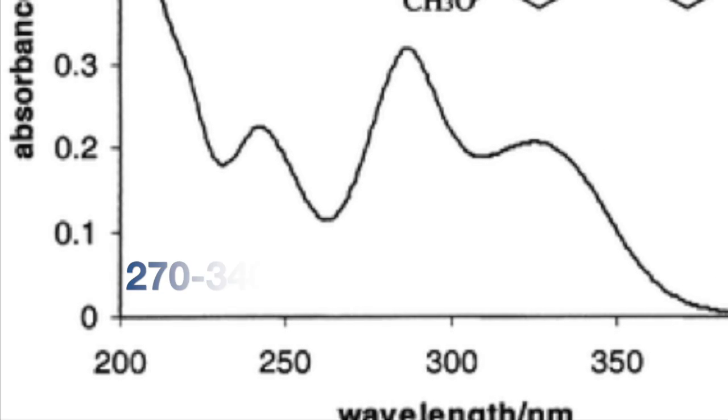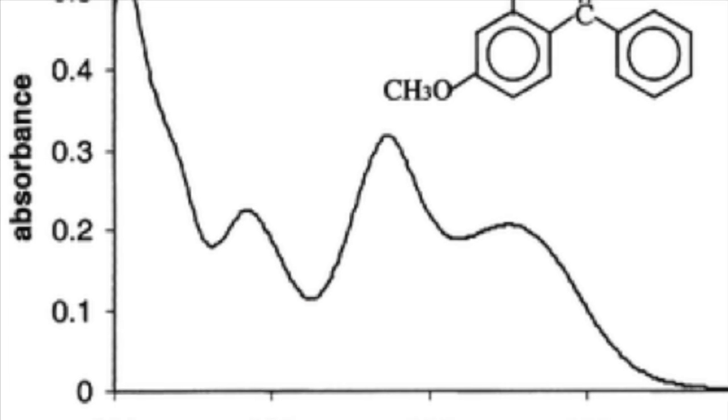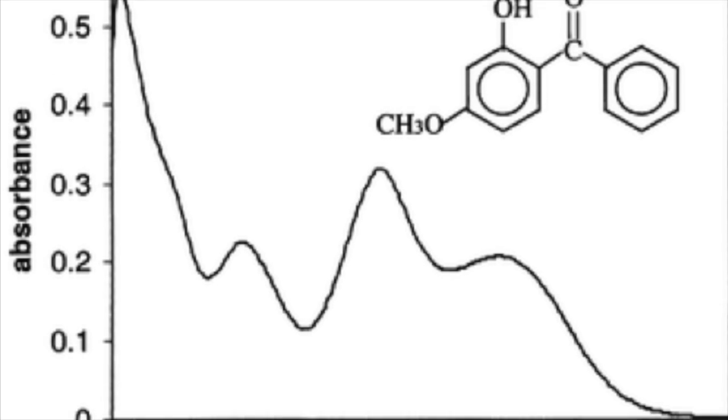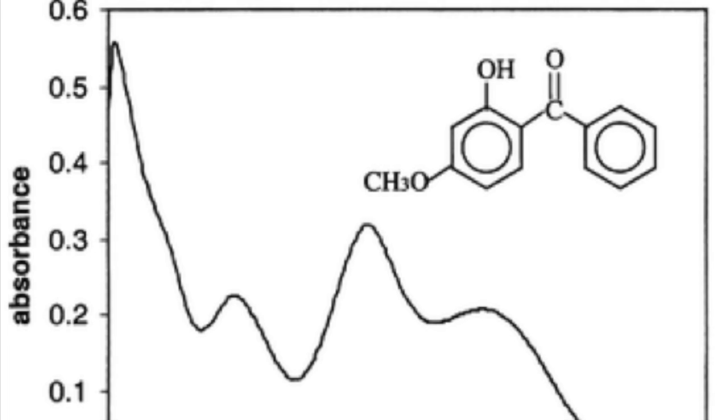Oxybenzone's absorption goes from 270 to 340 nm with peaks at 288 and 350 nm. The hydroxyl group and the ketone form a hydrogen bond, which contributes to the ability of oxybenzone to absorb light.